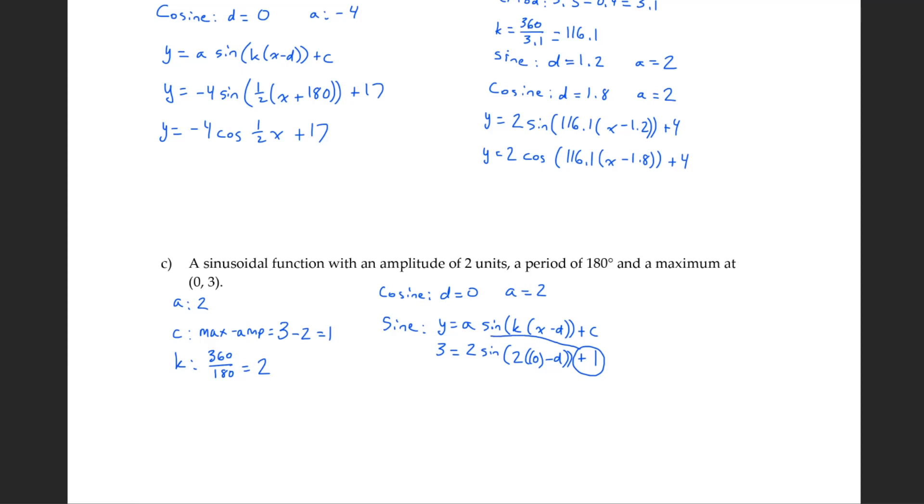Bring over the 1, and it becomes minus 1. 3 minus 1 is 2. 2 sine 2 bracket 0 minus d. Got rid of those extra brackets since it's a 0. Actually in that case we can go a little further. I don't even need to show the 0 because it's 0. That's negative d. Now we divide by 2. We get 1 equals sine bracket negative 2d. Sine inverse of 1 is equal to negative 2d. So it gives us 90 equals negative 2d. Divide by negative 2, and d equals negative 45.